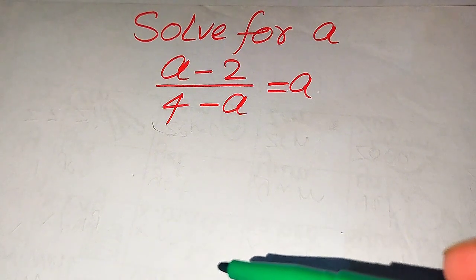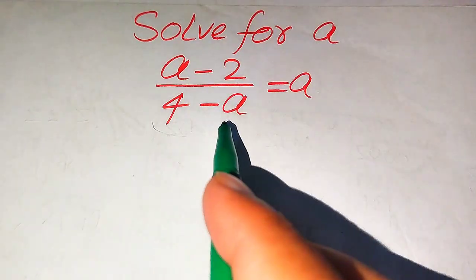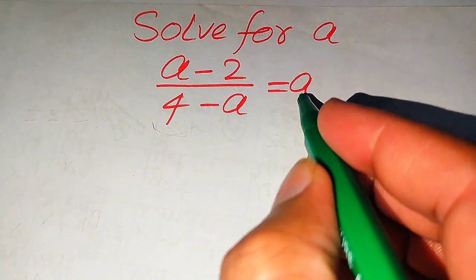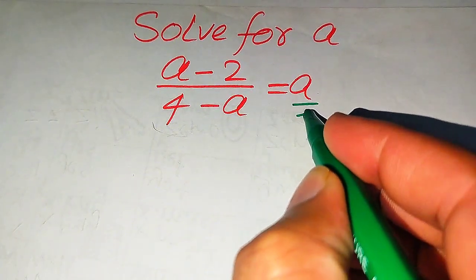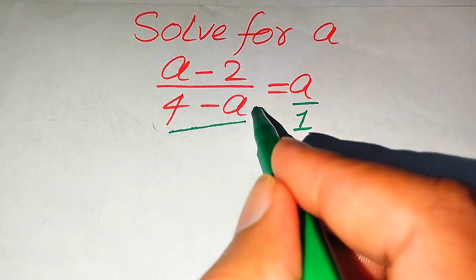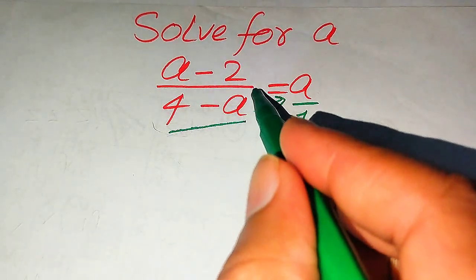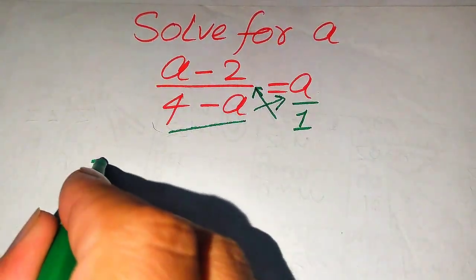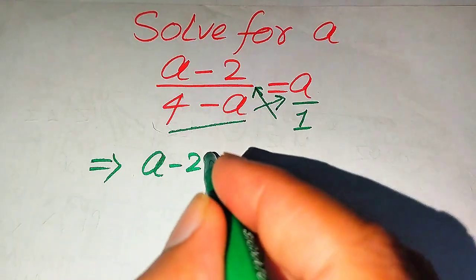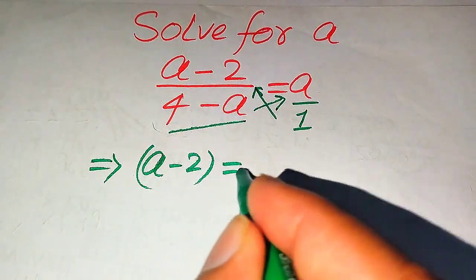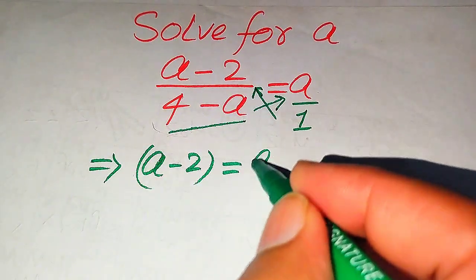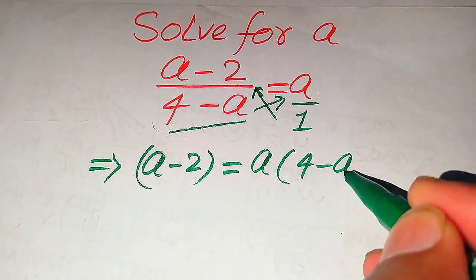The very first thing we are going to do is move the term in the denominator to the right hand side. In other words, the denominator of the right hand side is 1, so we cross multiply — we multiply all of this with a and multiply 1 with (a minus 2). After cross multiplication we get: a minus 2 equals a times (4 minus a).